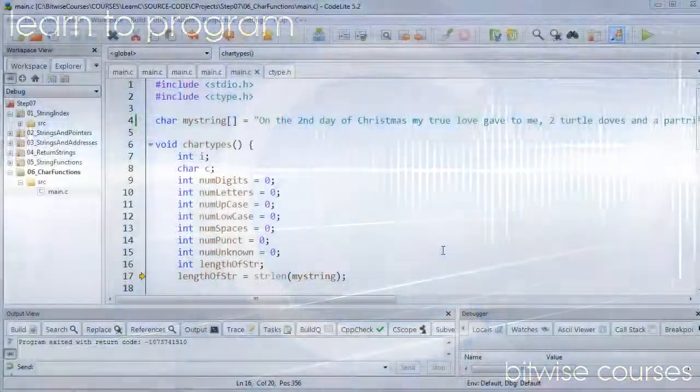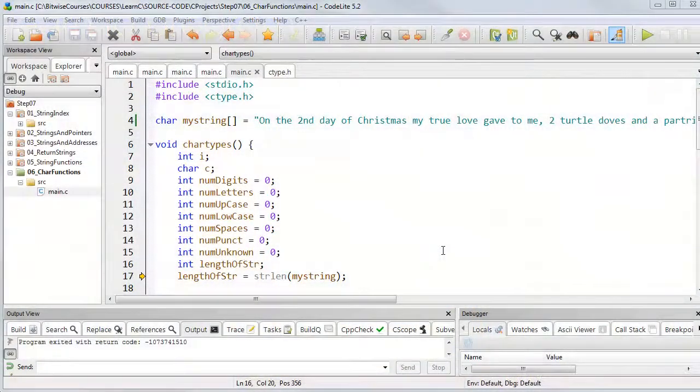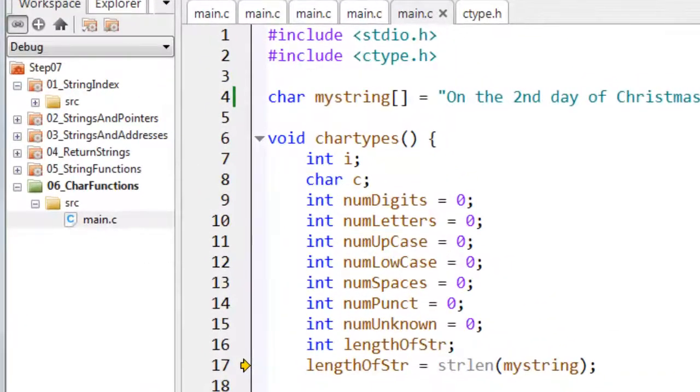There are also functions intended for use with single characters. They can help you to classify characters according to their type. Now to use these you will need to include the ctype.h file.